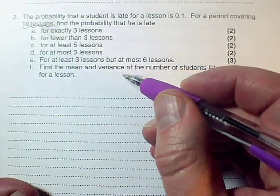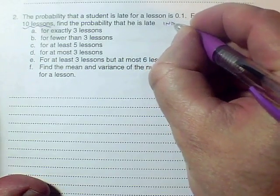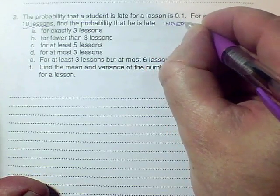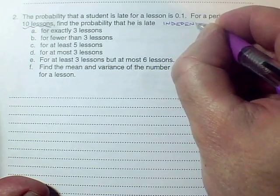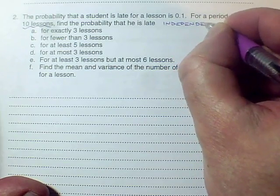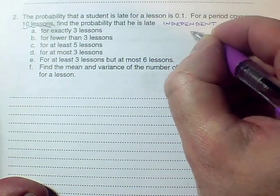The question doesn't say it's independent, but that is a necessary assumption. We need to assume that because the situation where we're counting successes in n independent trials is going to be binomial.